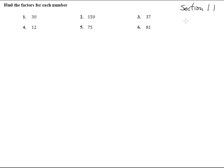Here we are in section 1.1, solutions to numbers 1 through 6. So we're going to do number 30. It says to find the factors, so we're not doing the prime factorization — we're just writing down everything that can go into it.